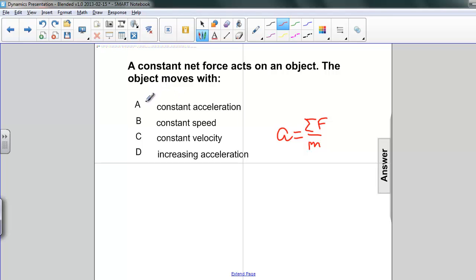If we have a constant acceleration, then the velocity and speed certainly cannot be constant. And if it's constant acceleration, it's certainly not increasing acceleration either.